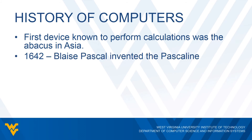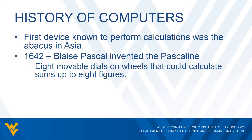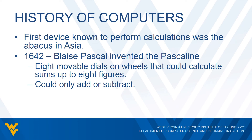The next advancement was in 1642 when Blaise Pascal invented what he called the Pascaline. This device had eight movable dials on wheels that you could move in order to do calculations, and it could handle sums up to eight figures — which nowadays may not seem like a big deal, but back then it was huge. The only problem was that you could only add or subtract values. Multiplication, division, modulus, exponents — you couldn't do any of that. Back then, adding and subtracting made people pretty happy.